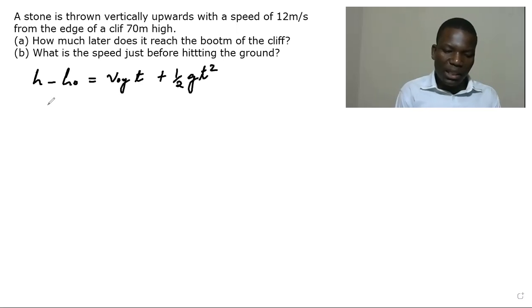So what we have is the final height is going to be zero if the bottom is the reference point. So we're going to have zero as a final height and the initial height is 20 meters and the initial speed in the y direction is 12 meters per second.